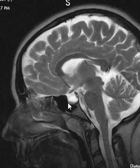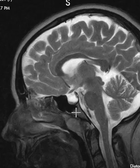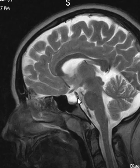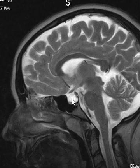The pituitary tissue is flattened along the sellar floor. In a young person like this, especially a young female, we'd expect a nice, big, plump, round pituitary. So we have elevated intracranial pressure with deficiency of the diaphragma sellae, and the fluid is pushed down and flattened the pituitary gland along the sellar floor.